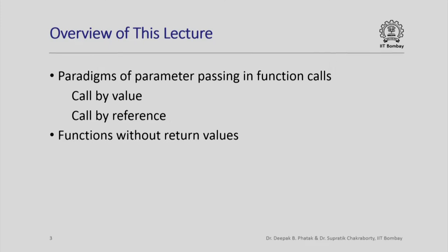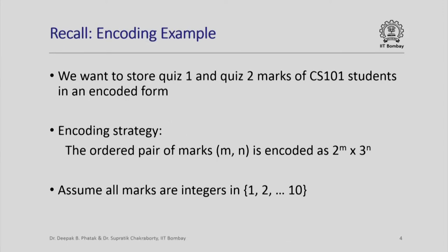We will also see how we could have functions that do not return any values. Recall from an earlier lecture we had considered an encoding example where we wanted to store the quiz 1 and quiz 2 marks of CS101 students in an encoded form. We agreed to encode the marks as: given an ordered pair of marks (m, n), we encode it as 2 raised to m times 3 raised to n, and all marks are integers in 1 through 10.